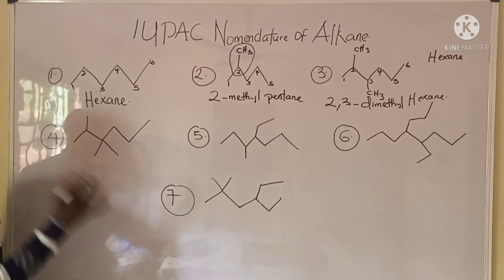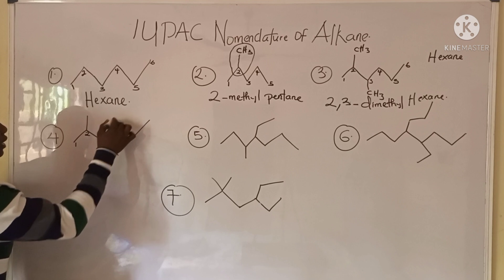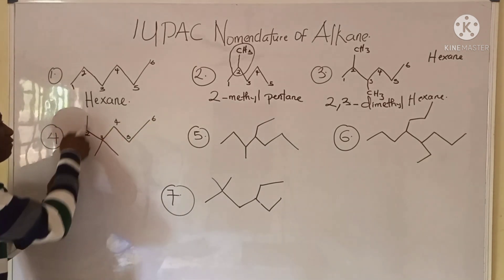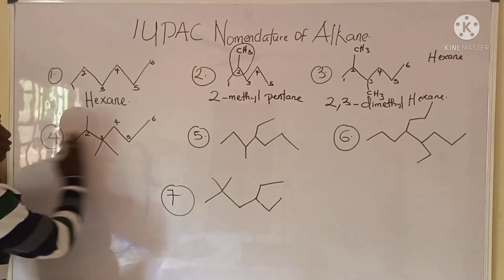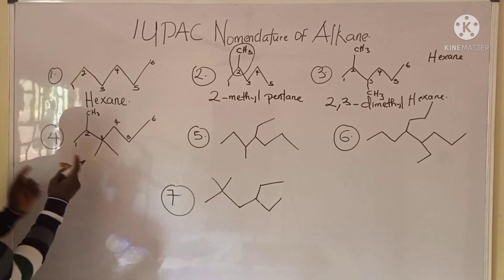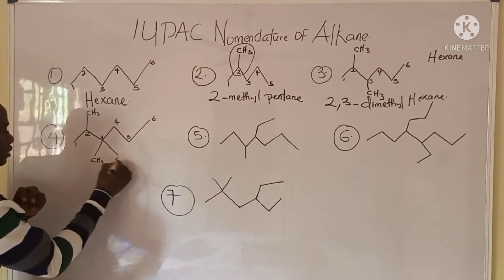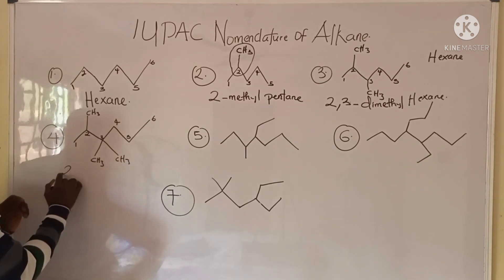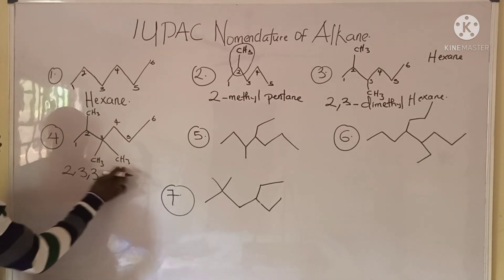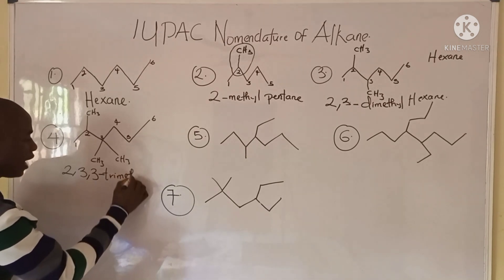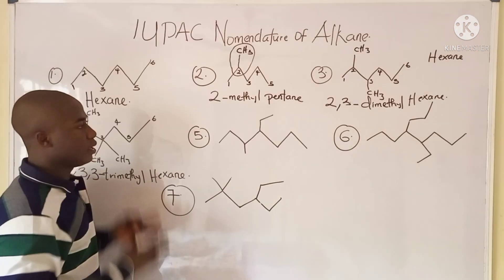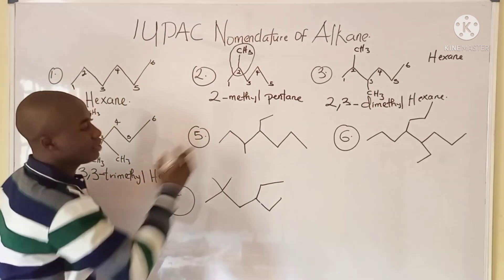Question four: the parent chain is one, two, three, four, five, six. Numbering from the other direction gives larger values for the substituents, so we number from this direction. At carbon two there is a methyl group, and at carbon three there are two methyl groups (CH₃, CH₃). So the name is 2,3,3-trimethyl — three methyl groups altogether — and the longest chain is six carbons, making it hexane. The name is 2,3,3-trimethylhexane.